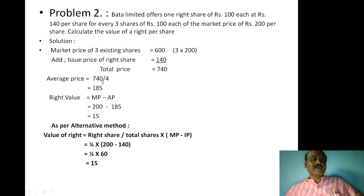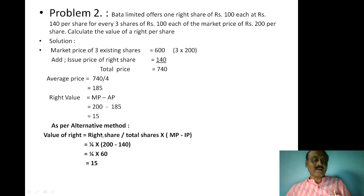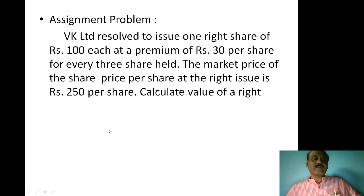To summarize: average price is calculated as total price divided by total shares. Total price equals market price multiplied by existing shares plus issue price of right issue. Then right value equals market price minus average price. Alternatively, right share divided by total shares multiplied by market price minus issue price. This is the formula. Now let's look at the assignment problem.